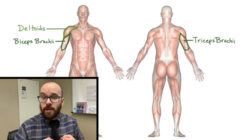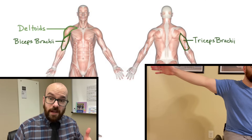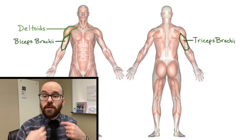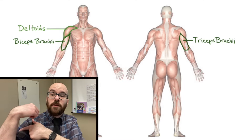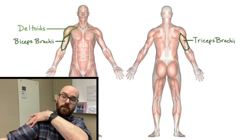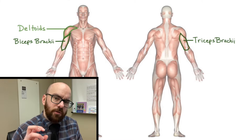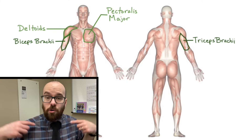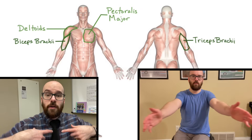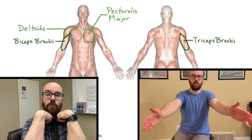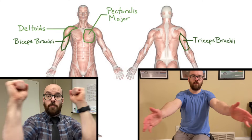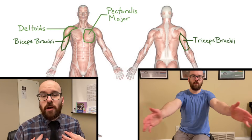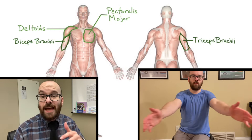Next are the deltoids — your shoulder muscles — whose purpose is to raise the arms. Raising your arms is an example of abduction, so abducting the arms is the function of the deltoids. The deltoids originate in the clavicle and sternum and insert to the humerus. The antagonist of the deltoid includes the pectoralis major, which rotates your shoulders anteriorly — pulling your shoulders forward, as in a pec fly or bench press.